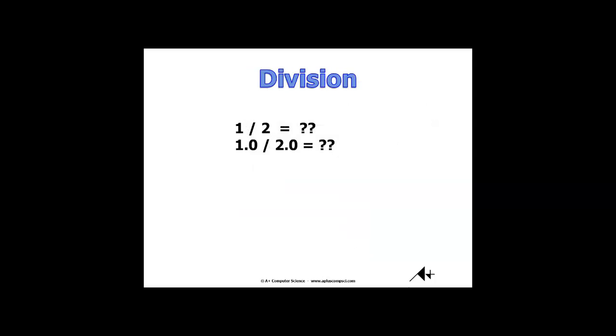So here we have a couple brain teasers. We've got one divided by two. How many times does two go into one if both values are integers? Two goes into one zero times. You're left with a remainder of one. When you have 1.0 divided by 2.0, you have fractional values, decimal values. Your result is going to be a fractional value.